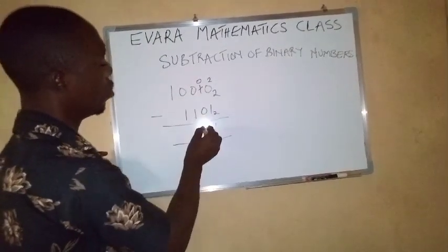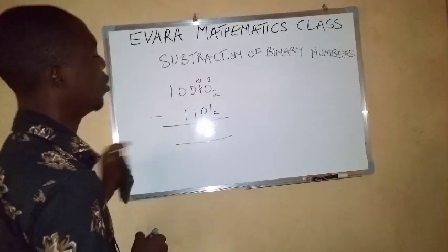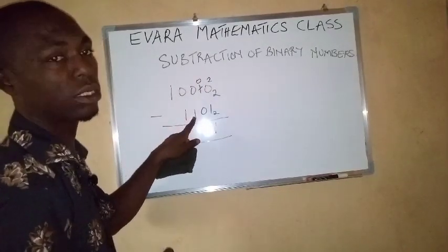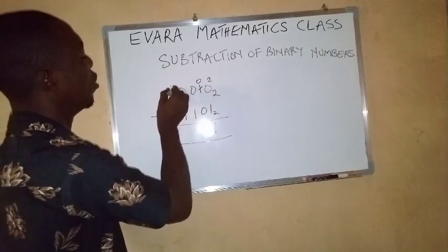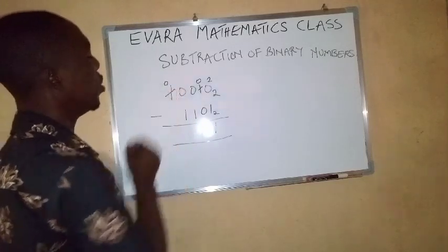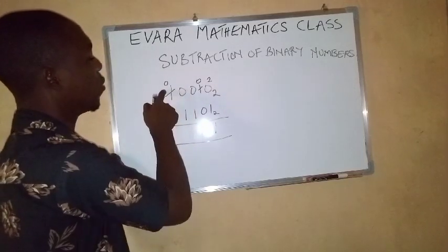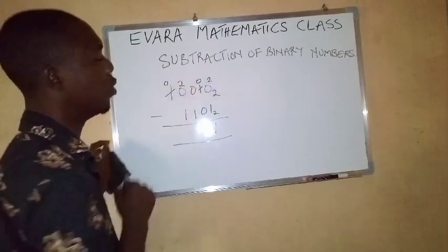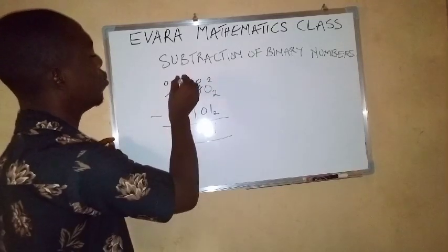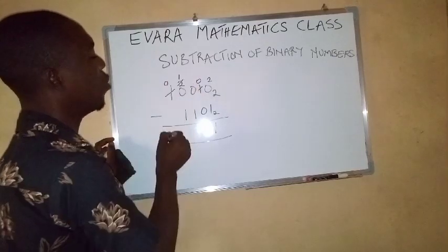0 minus 0 is 0. Again, 0 minus 1 is impossible. You borrow 1 from here, this one remains 0. The one you take from here, you put it here first. It will be 2. Now from these 2, you borrow 1, it will remain 1.